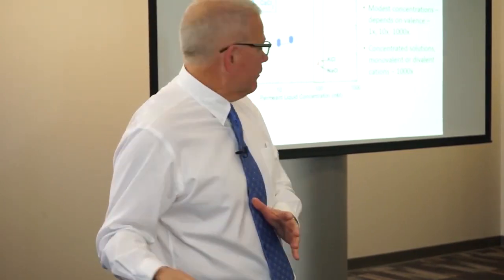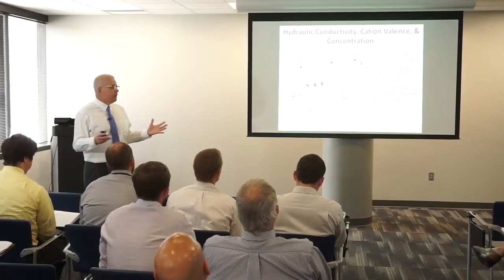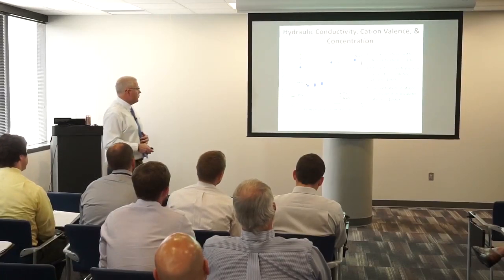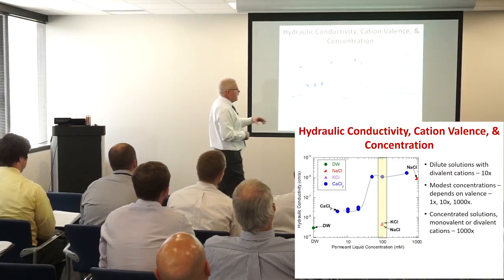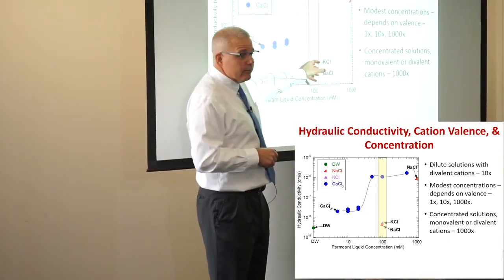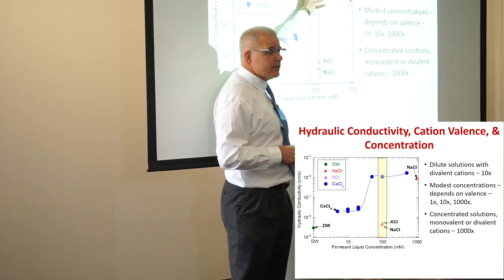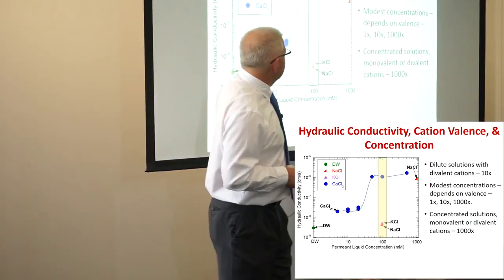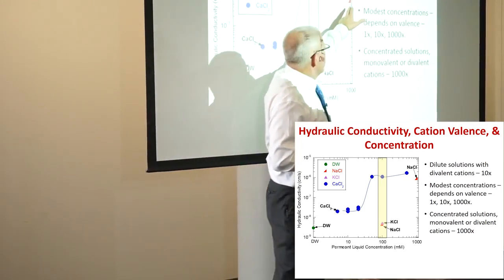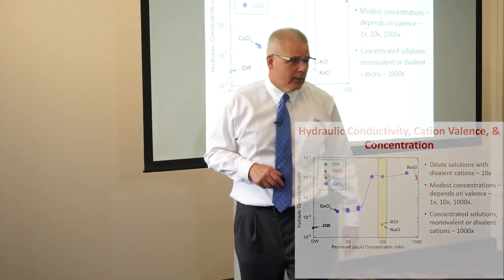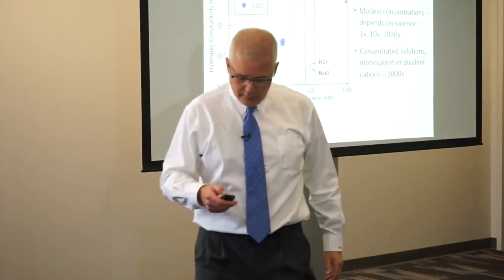So you might think about what type of leachates fall into the low-permeability zone and what type fall into the high-permeability zone. Things like sodium keep hydraulic conductivity very low, while divalent-rich leachates push it very high. And any leachate, if concentrated enough, tends to end up in the high hydraulic conductivity zone.